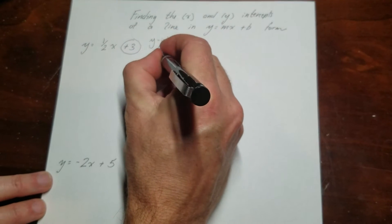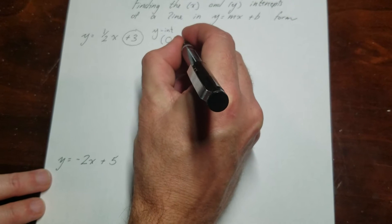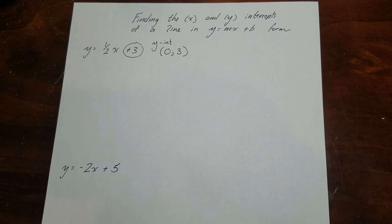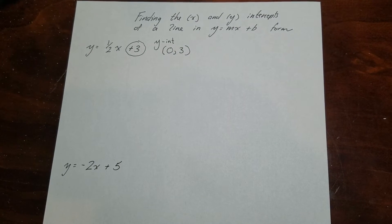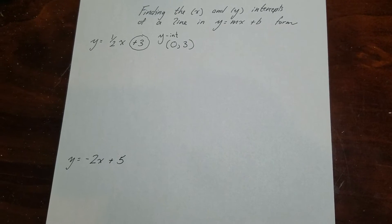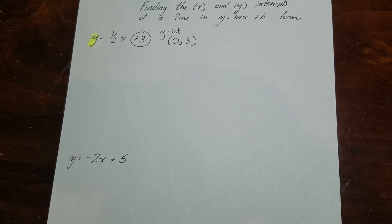So this one would be (0, 3). Now I have to find the x-intercept. As I just said, if I want to know what x is, I have to set the y to 0.